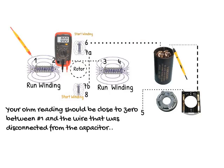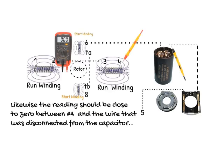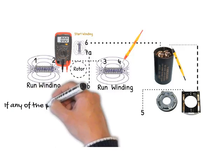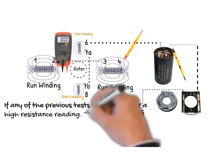The next test is similar to the previous, however, we will be connecting the test probe to the wire that we removed from the capacitor. Your ohm reading should be close to zero between number one and the wire that was disconnected from the capacitor. Likewise, the reading should be close to zero between number four and the wire that was disconnected from the capacitor.